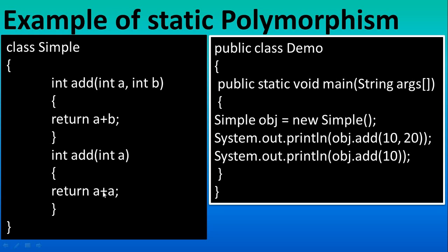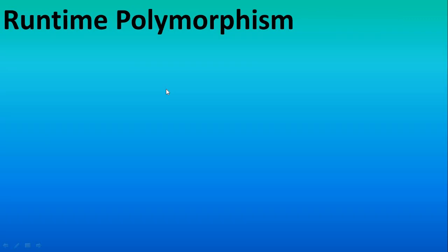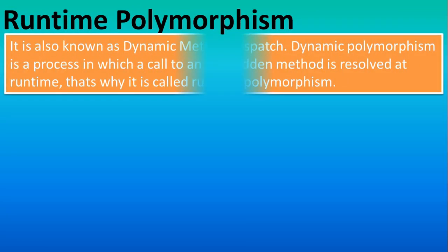In this program we are using the common object for running both methods. These are resolved at the compile time, that's why it is static polymorphism in the program. Now we will see the runtime polymorphism.